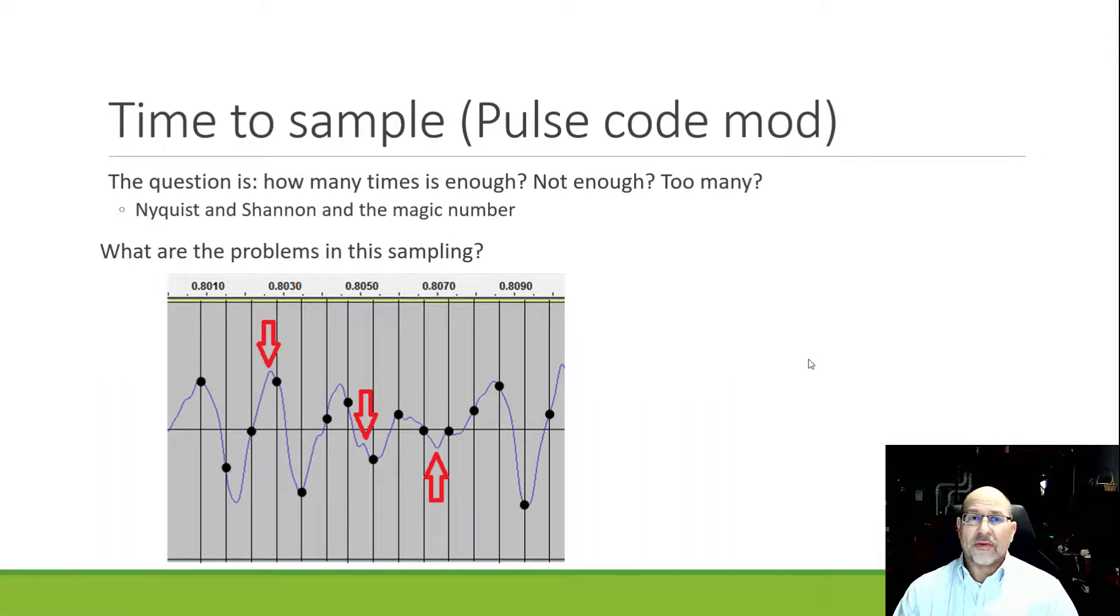Now Nyquist and Shannon have come up with the rules for how to accurately reproduce a signal. To accurately reproduce a signal, you've got to have the correct sampling rate and the correct quantizing values. There's a magic number that's associated with reproducing a signal, and it is directly related to the input frequencies.